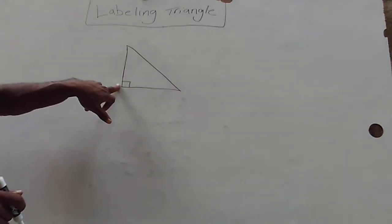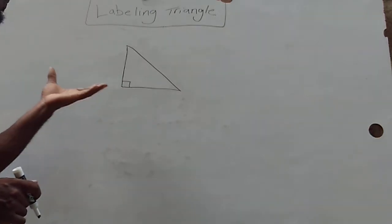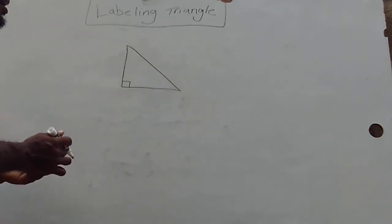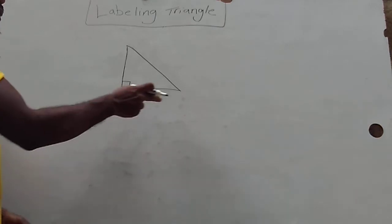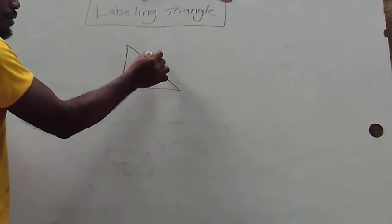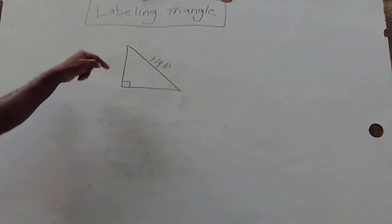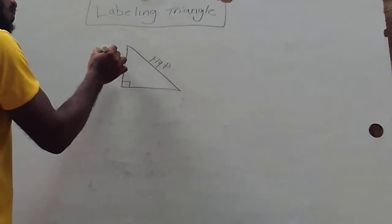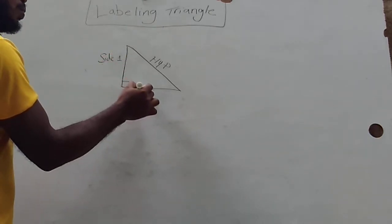Here would be the right angle, and of course the side opposite to the right angle will be the longest side, which will be called the hypotenuse. For the other sides, they can be labeled as side one and side two.